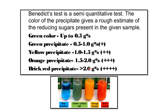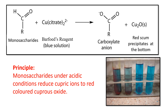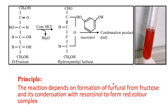For Benedict's test, it will give brick-red precipitate as the sample is a reducing sugar. For Barfoed's test, since it is a monosaccharide, it will give a red scanty precipitate at the bottom. For the Seliwanoff test, glucose would be negative and fructose would be positive, giving a cherry-red color.